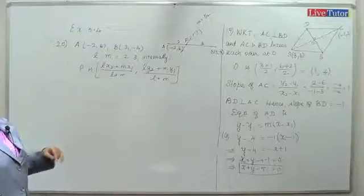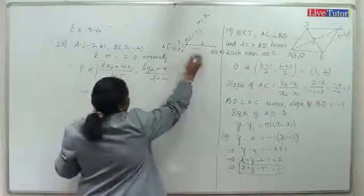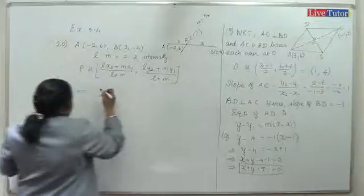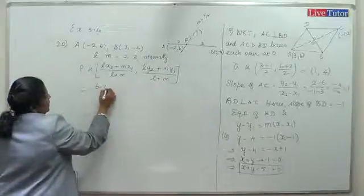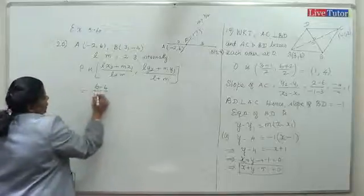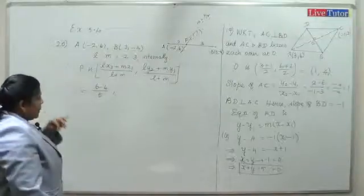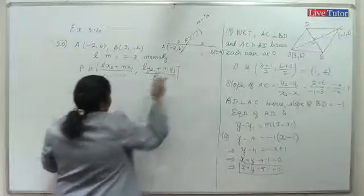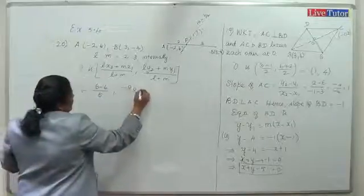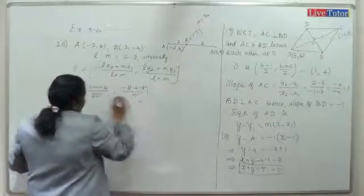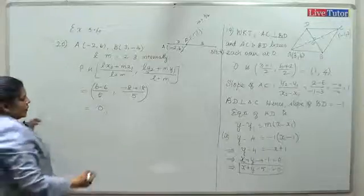Calculating x-coordinate: (2×3 + 3×(-2))/(2+3) = (6 - 6)/5 = 0/5 = 0. Calculating y-coordinate: (2×(-4) + 3×6)/5 = (-8 + 18)/5 = 10/5 = 2. So P is the point (0, 2).